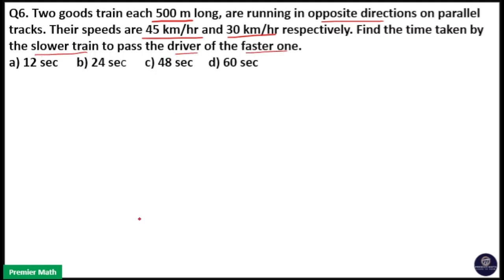Here, two trains are running in opposite directions with speeds of 45 and 30 kilometers per hour respectively, and both have equal length. We have to find out the time taken by the slower train to pass the driver of the faster one.